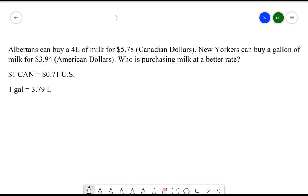One more example for today. My last example for today. Albertans can buy 4 liters of milk for $5.78 Canadian dollars. New Yorkers can buy a gallon of milk for $3.94 American dollars. Who is purchasing milk at a better rate? Here, what I need for this question is the conversion between Canadian and U.S. dollars.